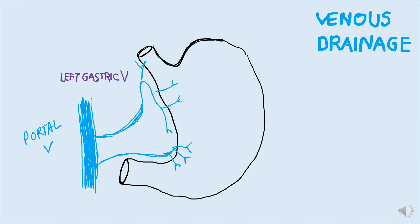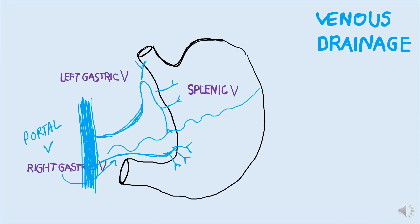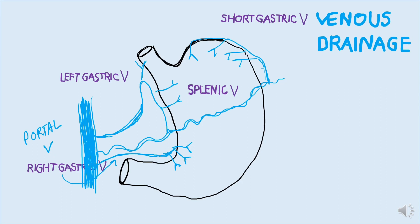In a similar manner, the splenic vein drains into the portal vein directly. The short gastric vein, which is a branch of the splenic vein, drains the fundus portion — the upper portion of the greater curvature of the stomach. These short gastric veins drain into the splenic vein, which eventually drains into the portal circulation.